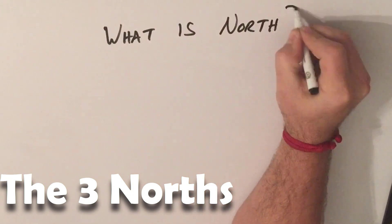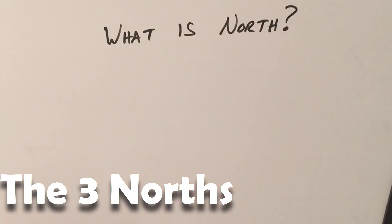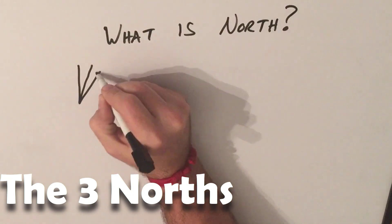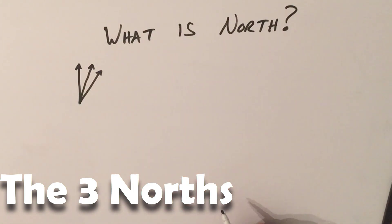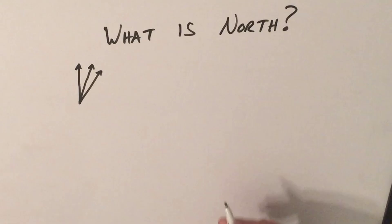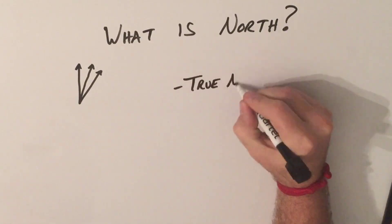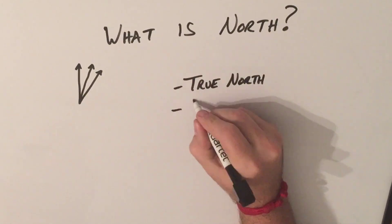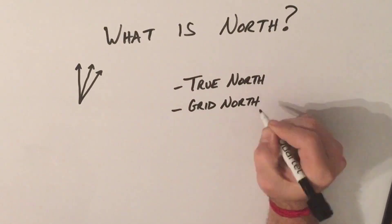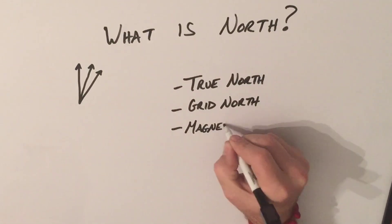What is North? To understand how to read a map and compass, you need to understand the difference between the three Norths, which are known as True North, Grid North, and Magnetic North.